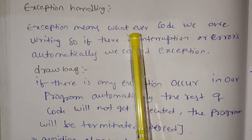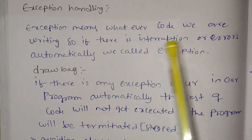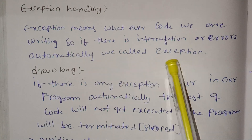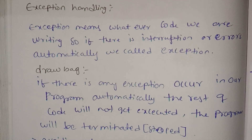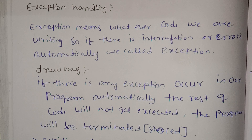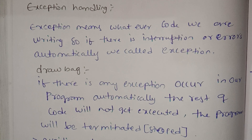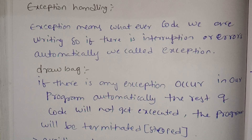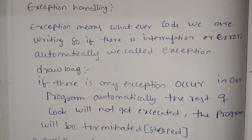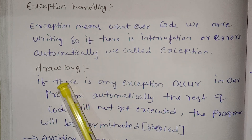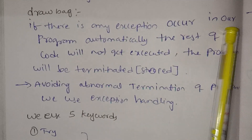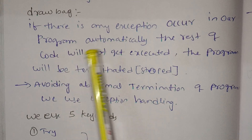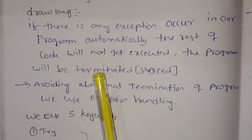Exception means whatever code we are writing — if there is an interruption or error, we call it an exception. In a program, there can be code or syntax mistakes, interrupts and errors. If there is any exception that occurs in our program, automatically the rest of the code will not get executed.